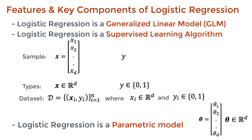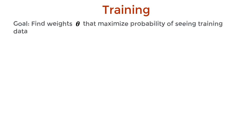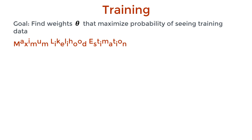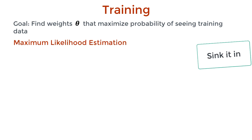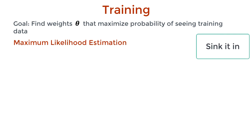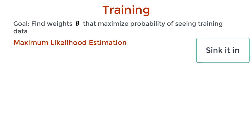So we've laid out some of the ground variables. Let's now talk about training. The main goal of training is to find the model parameters — that is, the weights theta. We want to find the weights that maximize the probability of seeing this training data. In machine learning lingo, this is maximum likelihood estimation. Let this definition sink in, because it is a very important concept in machine learning theory.